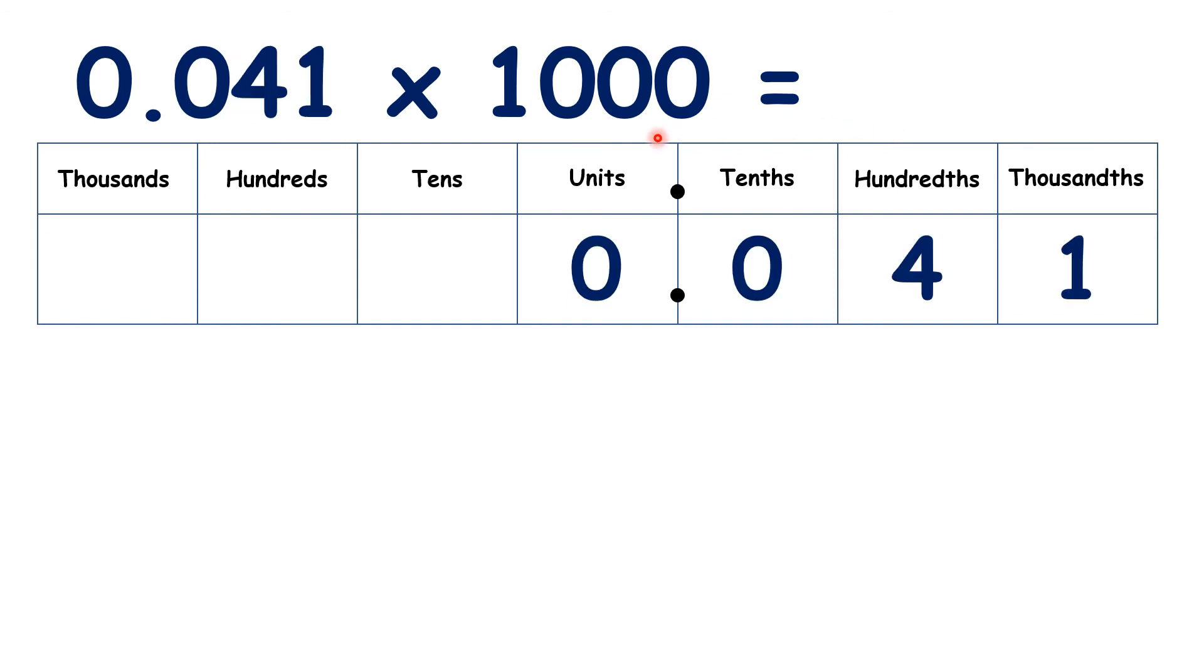Now, what is 0.041 times 1,000? Remember, we're moving the digits three places. We can ignore these 0s at the start of our number, so we have 41.